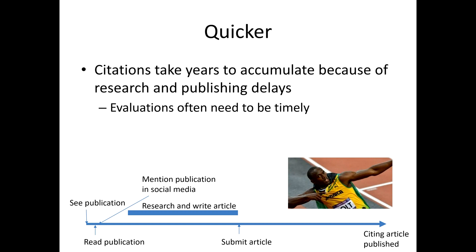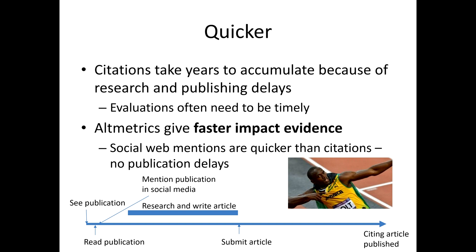This means any robust citation analysis is really assessing what happened four or five years in the past at least — it's no longer assessing what's happening today. That's a big disadvantage if you want to know how researchers are performing. A researcher can't demonstrate with citations that they're performing well today, only that they performed well five years ago.